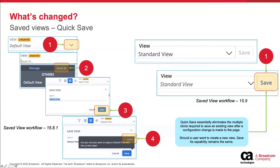Then you have to confirm that you actually want to make that final save — essentially four clicks. If you're doing this quite often, it can be time consuming or somewhat annoying. On the right-hand side, in the same scenario — whether you've extended a column width or added/removed multiple attributes from a particular grid — the view moves into an italic state. It's really simple now: to save the view, you just click once. So it's quite simple.